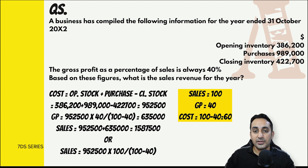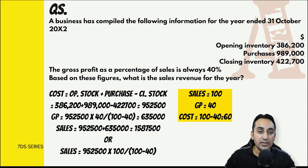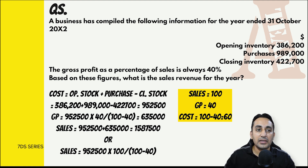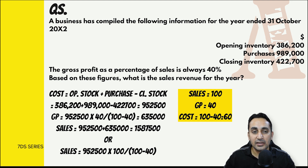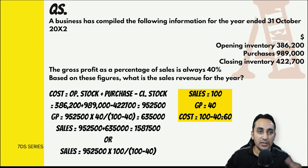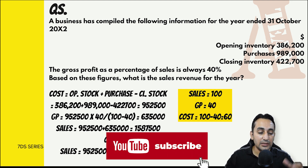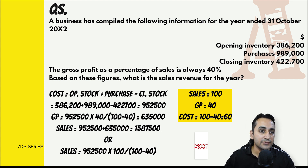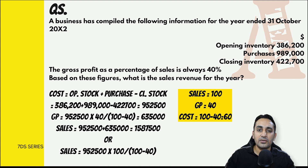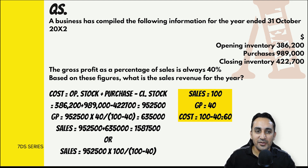Question में देखेंगे कि cost दे रखा है या sales। यहाँ clearly opening stock + purchases - closing stock यानी cost की information दे रखी है। तो denominator 60 होगा क्योंकि equivalent amount already निकाल लिया। Cost निकलती है 952,500। Sales कितना है यह निकालना है - gross profit = 952,500 × 40/60। इसे cost में add करो तो sales मिलेगा। Shortcut: cost ÷ 60 × 100 से directly sales मिल जाएगी।